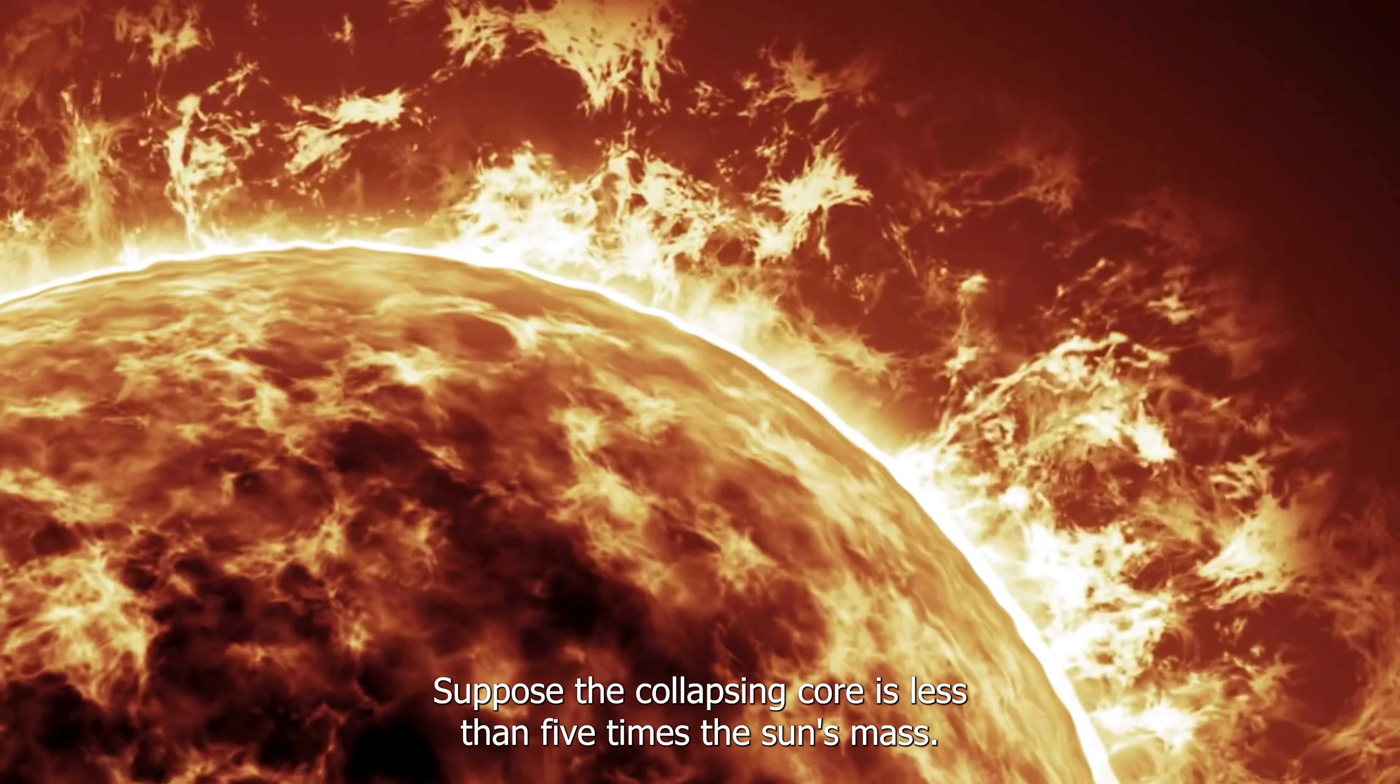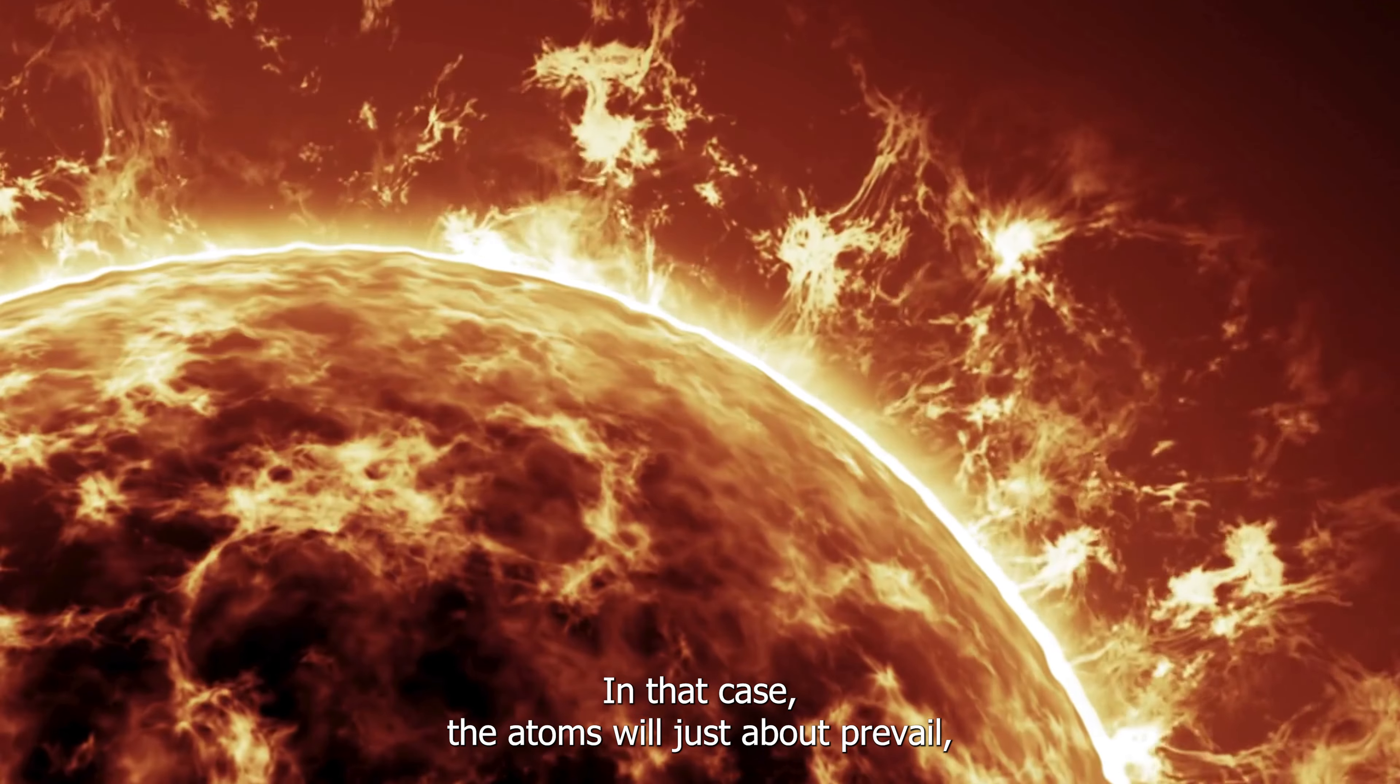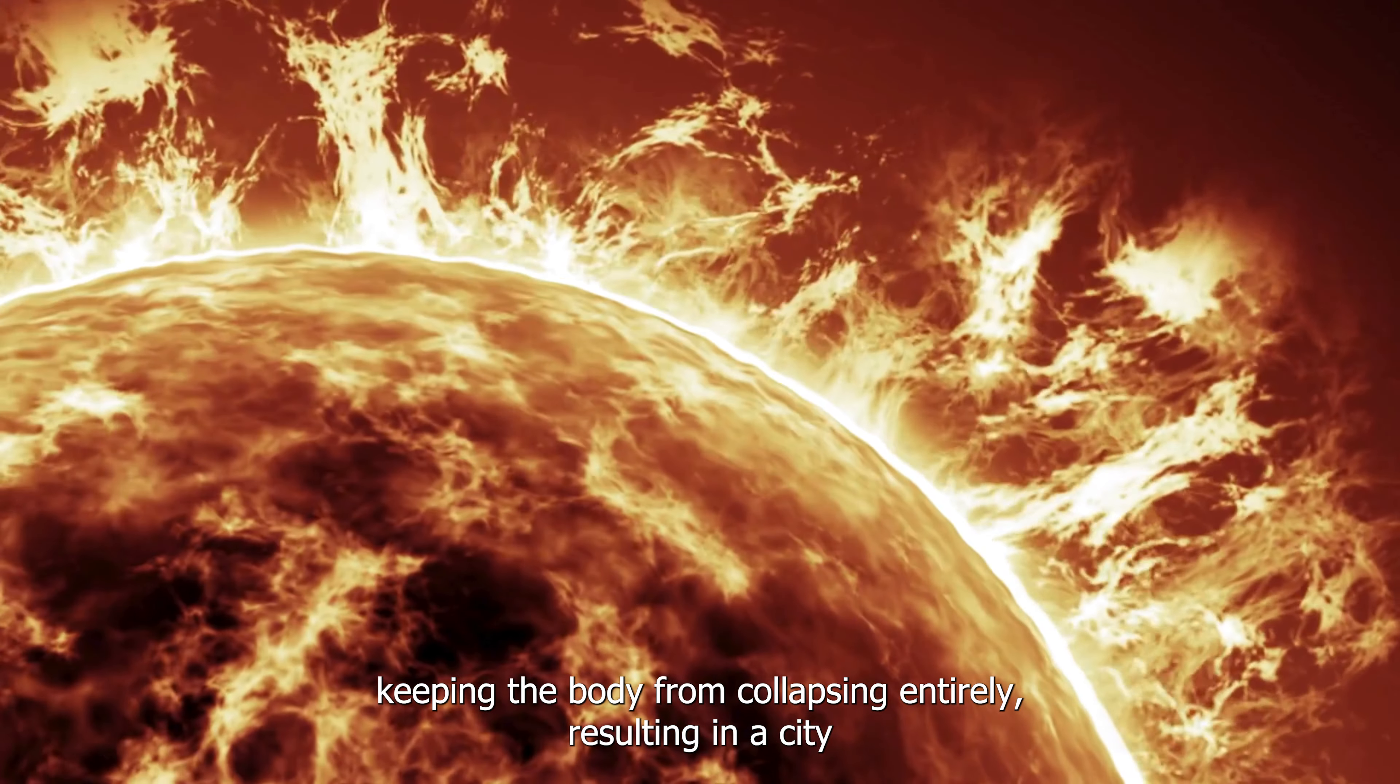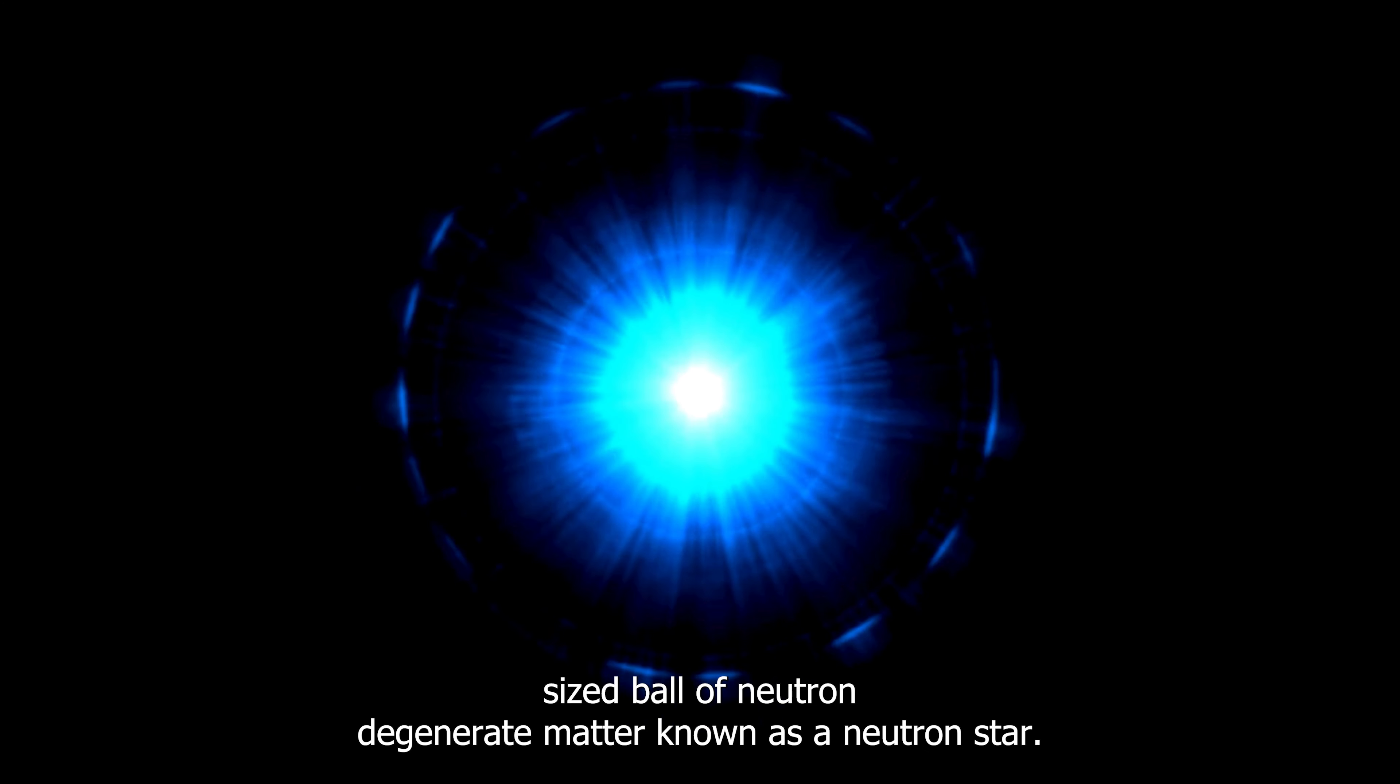Suppose the collapsing core is less than five times the sun's mass. In that case, the atoms will just about prevail, keeping the body from collapsing entirely, resulting in a city-sized ball of neutron degenerate matter known as a neutron star.